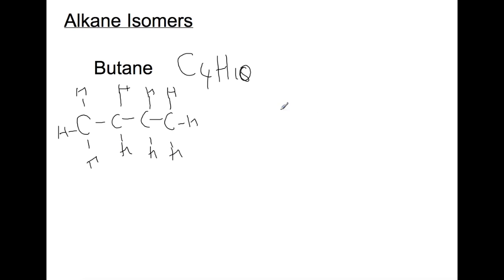To draw the structure for an isomer, for an alkane, the easiest way to do is to take the end carbon off and move it in one carbon to create a branch.